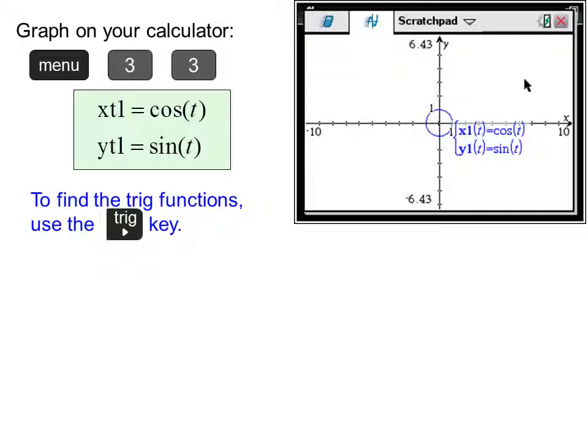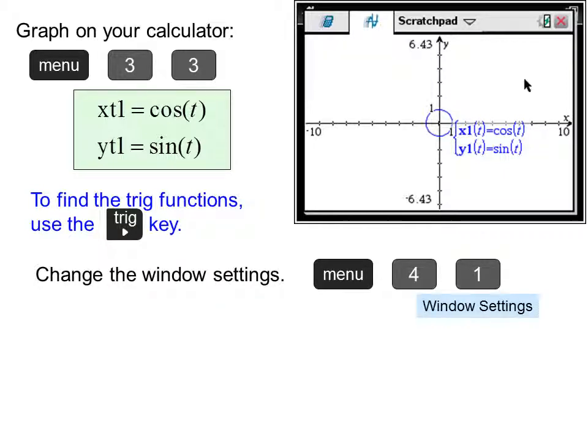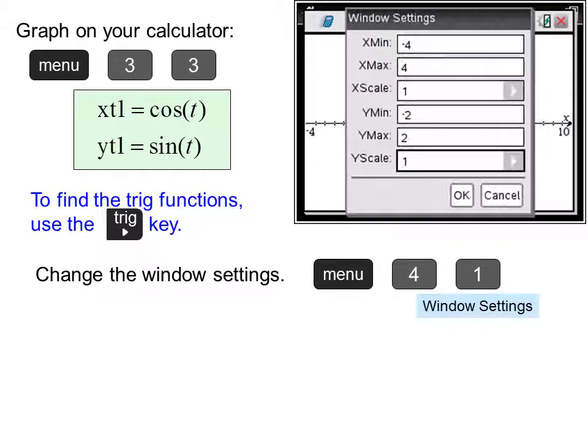To enter the upper limit of t, we'll enter two pi and the calculator will change it to 6.28. We get our circle, although it looks pretty small, so we'll want to change the window settings. Press menu, four, one, window settings.